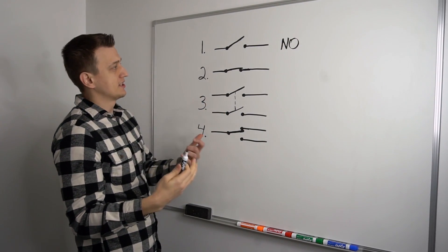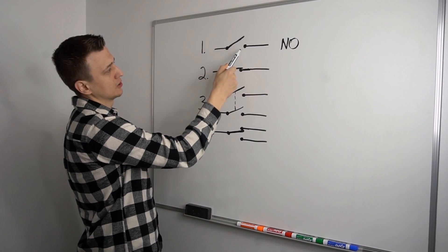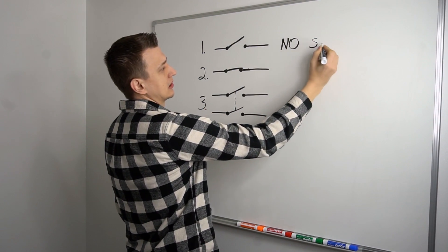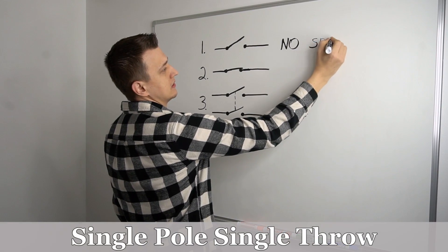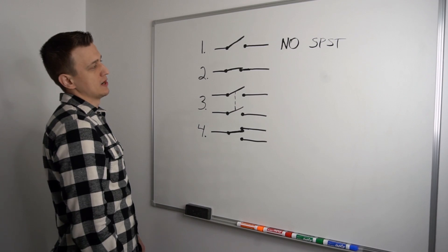And to be more technical about it, this is a single pole, single throw. So it has one pole, and it only goes one direction. If you ever see that, this is what that would look like. SPST, normally open switch.